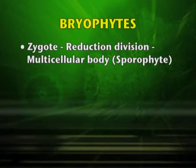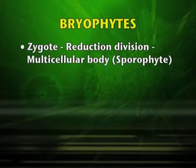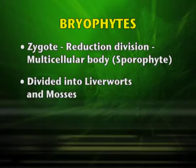After fertilization, the zygote is formed and this zygote undergoes reduction division to form the multicellular body called the sporophyte. Bryophytes are divided into liverworts and mosses.